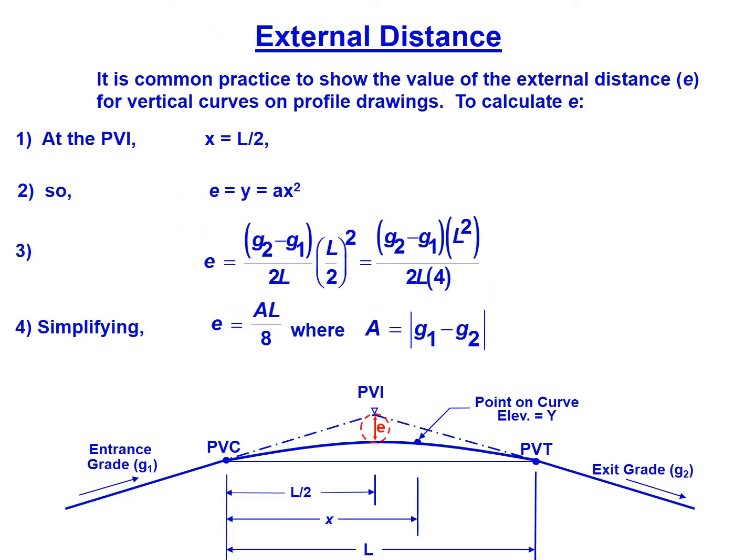We can also look at the equation for the external distance. This is E, the distance between the PVI and the midpoint of the curve. At the PVI, we know that X is going to be half the length because our PVI is always bisecting the distance between the PVC and PVT. So our external distance E equals Y equals AX squared.